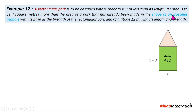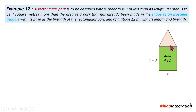The isosceles triangle has its base equal to the breadth of the rectangular park, and its altitude is 12 meters. The altitude means the vertical height, which is 12 meters.